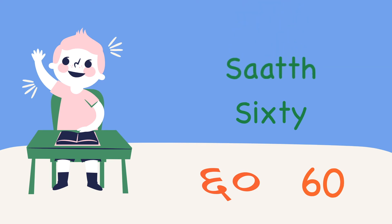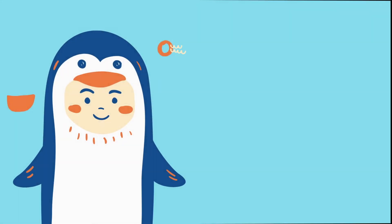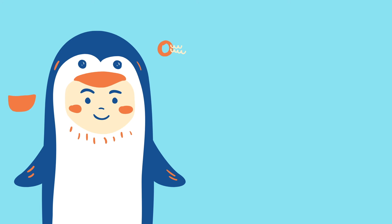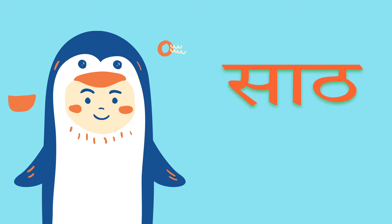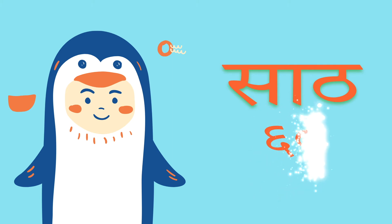Sixty in Hindi is 'saath'. That's how we write it in Hindi. That's six and zero — che aur shunya — saath.